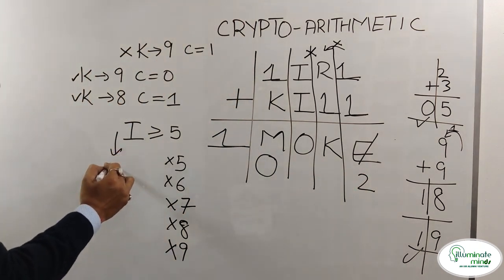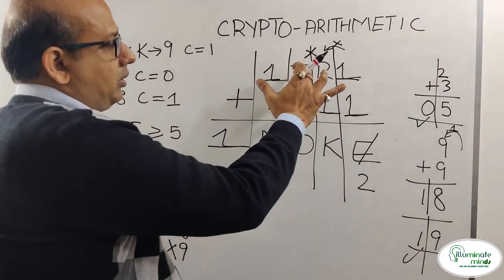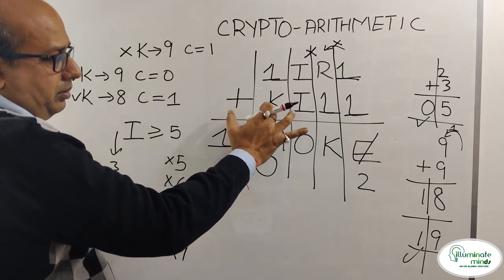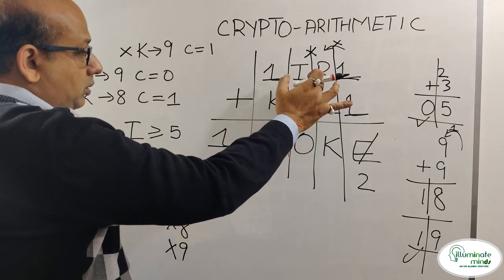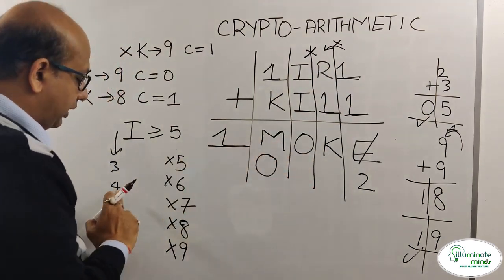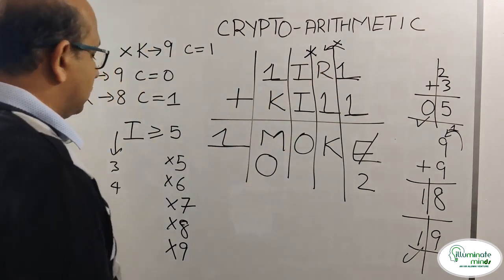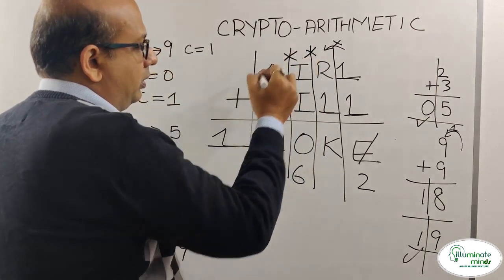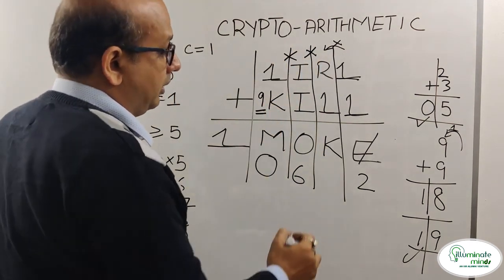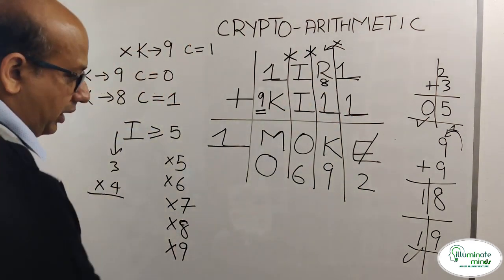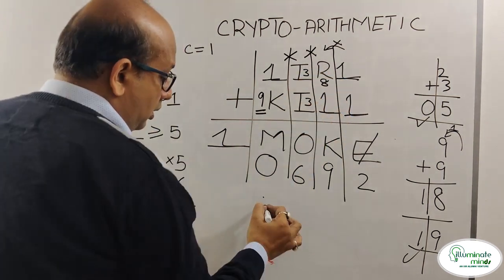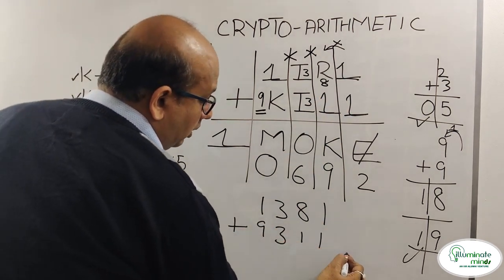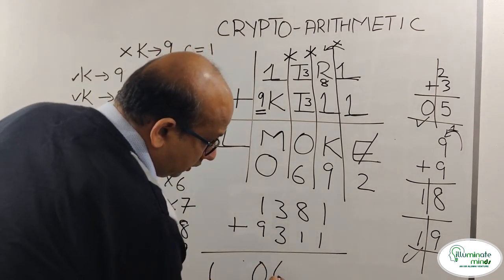I cannot be 0, 1, or 2, so the only choices left for I are 3 or 4. If I equals 4, then 4 plus 4 gives 8 with no carry-over, meaning K is 9 and R is 8 — but then I and R would both be 4 and 8, which conflicts. Testing I equals 3: 3 plus 3 gives 6 with no carry-over, so K is 9 and R is 8. The final answer is 1381 plus 9311 equals 10692.